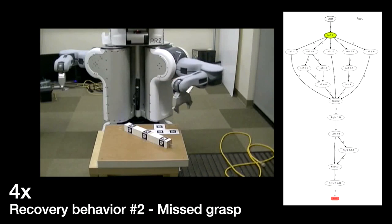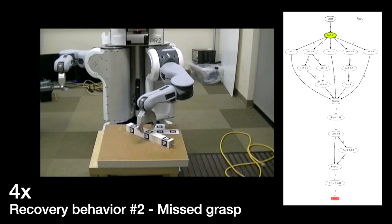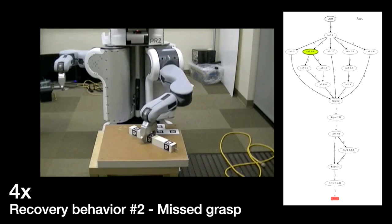Here, we see another recovery behavior, in which the robot recovers from a missed grasp, taking a different path than the finite state machine seen on the right.